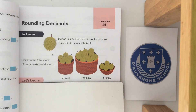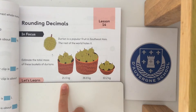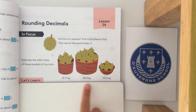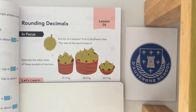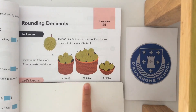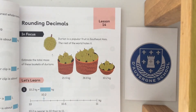Based on what we learned in lesson 13, a good method to estimate the total mass of these baskets would be to look at each weight of durians and see if you can round it to the nearest kg. If it's 0.5, we round it up. You'd look at the tenths column and see whether you round it up or down to the nearest kg. So let's have a look in our Let's Learn.